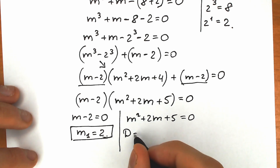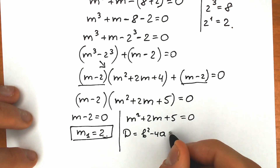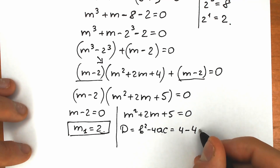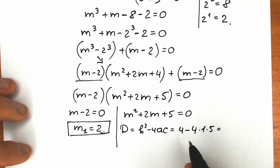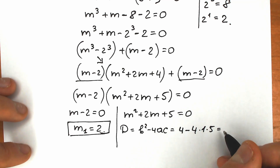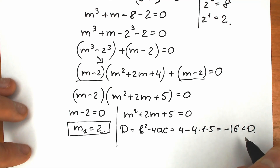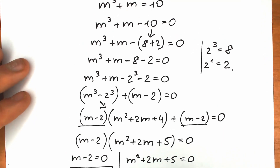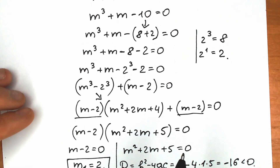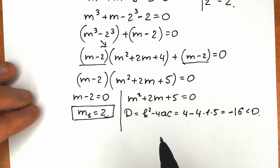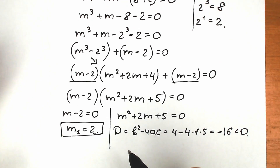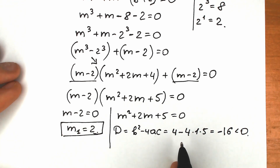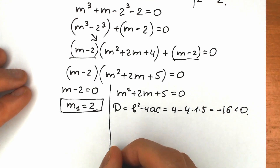Let's find our discriminant quickly. The discriminant equals b squared minus 4ac, which is 4 minus 4 times 1 times 5, giving us 4 minus 20. Our discriminant is negative, which tells us we have complex solutions. By the fundamental theorem of algebra, since we started with the third power, we have three roots in total — we can now see that one is a real root and the other two are complex.